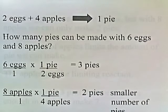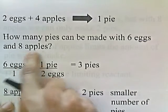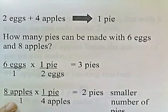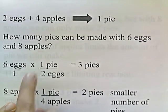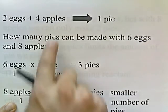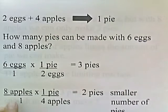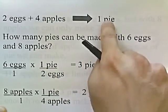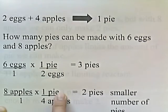How many pies can we make with eight apples? Take eight apples and we want to convert that — put that over one. We want to convert from apples into pies, and four apples make one pie. So put four apples on the bottom and one pie on top. If we do that, you can make two pies.